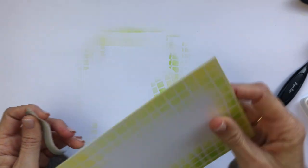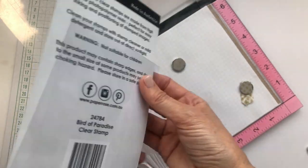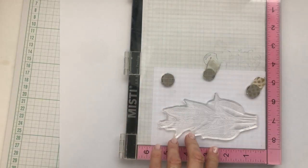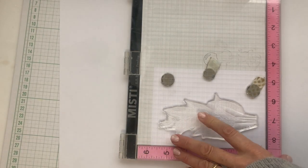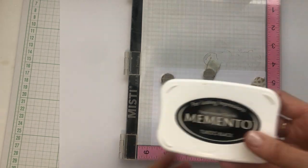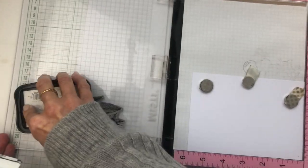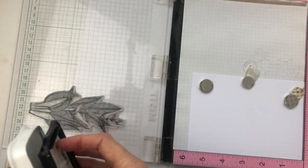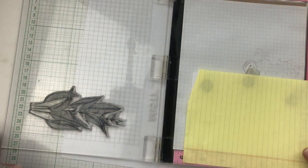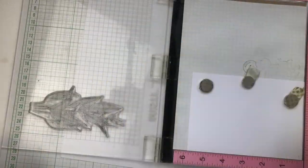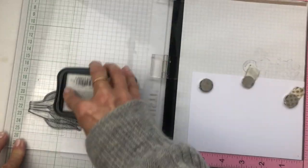And here's the stamp, it's called bird of paradise and I'm going to stamp that with memento tuxedo black ink. I've got lots of different ways that I prepare a new stamp but one of them is to just stamp it off onto some scrap paper first to kind of prime the stamp and also to check the image.